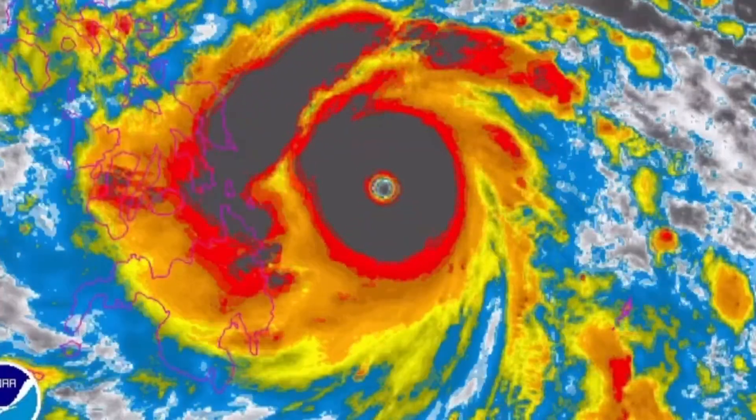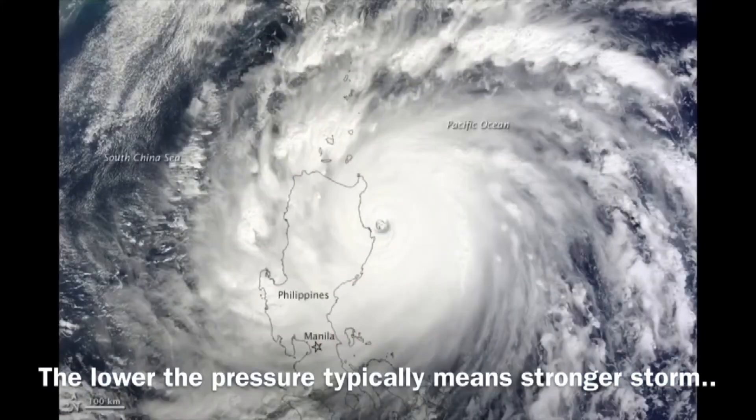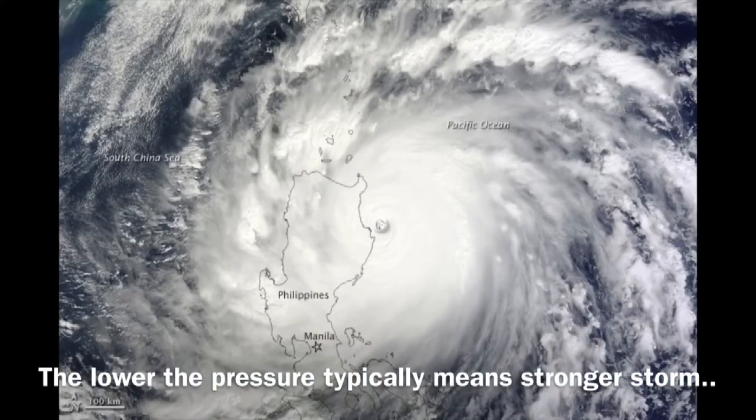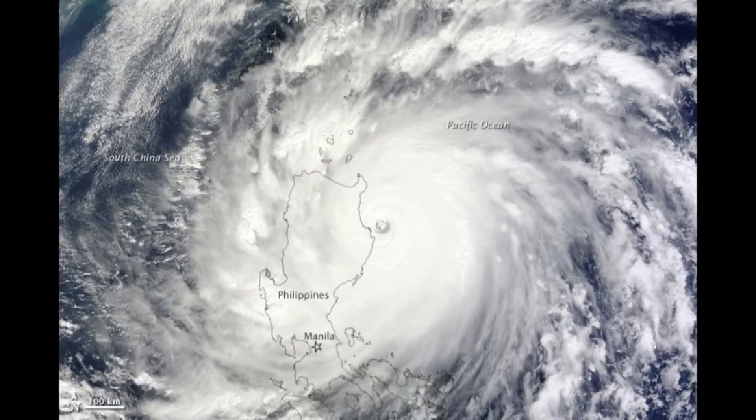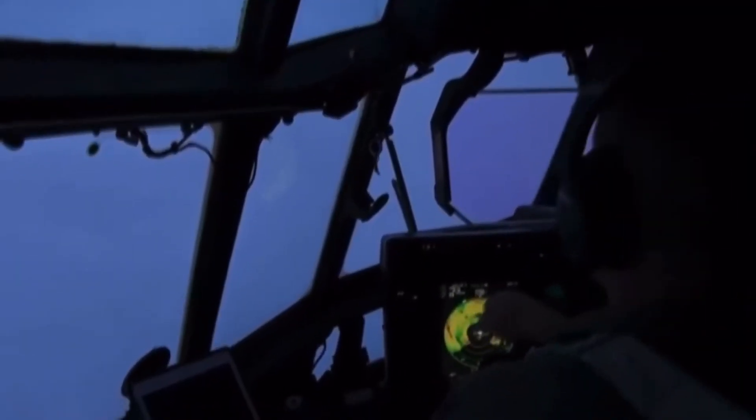But here's the thing. Typhoon Megui, which also hit the Philippines, had a pressure of 885 hectopascals. Now you might be asking, why was that one 10 lower than Typhoon Haiyan, which was considered the stronger storm system? The reason is because there was actually a reconnaissance flight associated with the ITOP program from the USA that flew into Typhoon Megui and got an accurate reading of the storm.